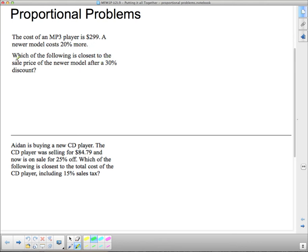A newer model costs 20% more. Which of the following, and this is one of those word problems that says that it was multiple choice. Which of the following? There's no following. So if it says that, I've just taken them away. And what I want you to do is actually calculate the final answer. So it says, which of the following is the closest sale price of the newer model after a 30% discount? Okay, so here's the thing. The MP3 player was $299. The newer model costs 20% more. And then it's given a 30% discount. And we want to know how much it costs. So we're going to take a look. The cost of an MP3 player is $299. The newer model costs 20% more. So we need to figure out what 20% of $299 is.